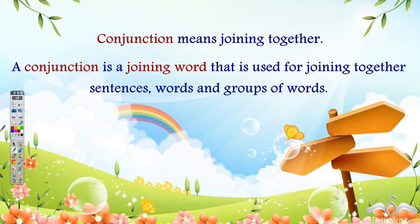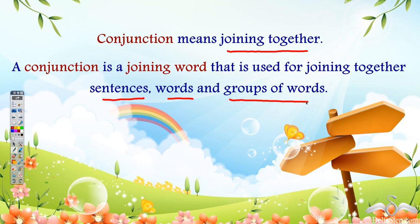We have learnt that conjunction means joining together. So a conjunction is a joining word that is used for joining together sentences, words and groups of words. We know that 'and', 'but', and 'or' are some common conjunctions. Let us learn about some new conjunctions today.